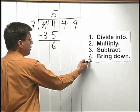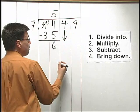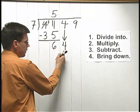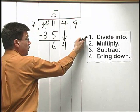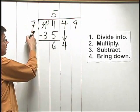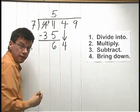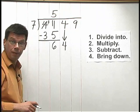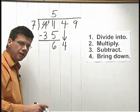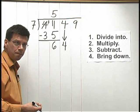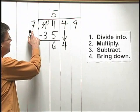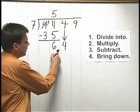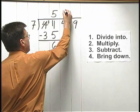After we subtract, we bring down the next digit. I'm going to bring down the 4 and write it right next to the 6 that we have. I now think of this as 64. After the bring down step, we go back up to divide into. I need to ask myself, how many times does 7 go into 64? Now, it's very easy to make a mistake at this point. In fact, I'm going to make this mistake on purpose. We'll correct it in a little bit — see if you can spot it. 7 into 64: I know 7 times 8 is 56. 56 is less than 64, so I'll write an 8 above the 4.